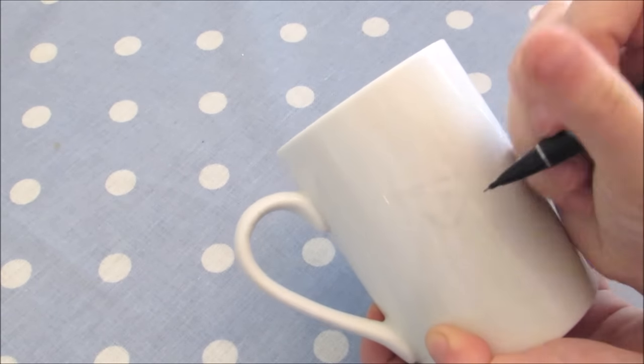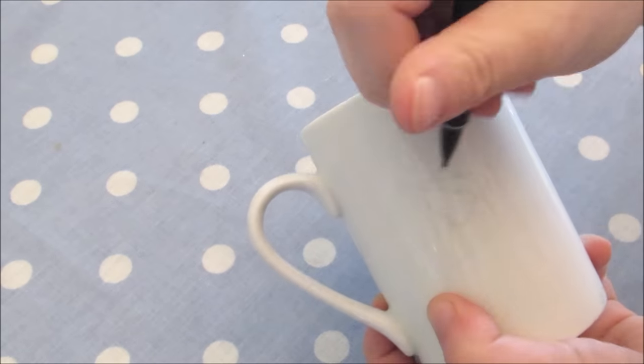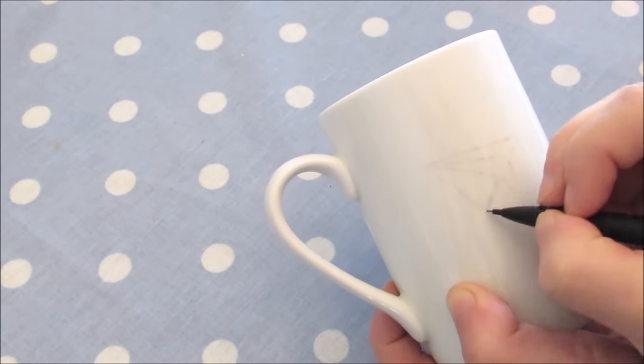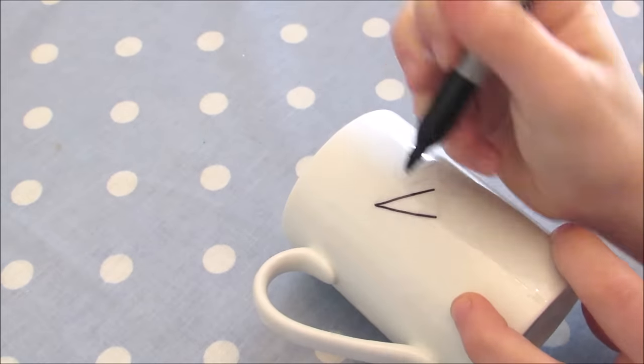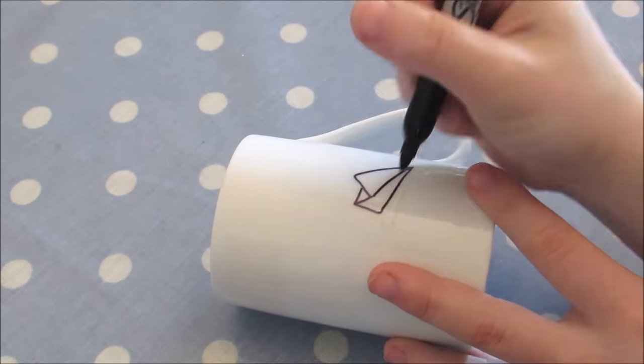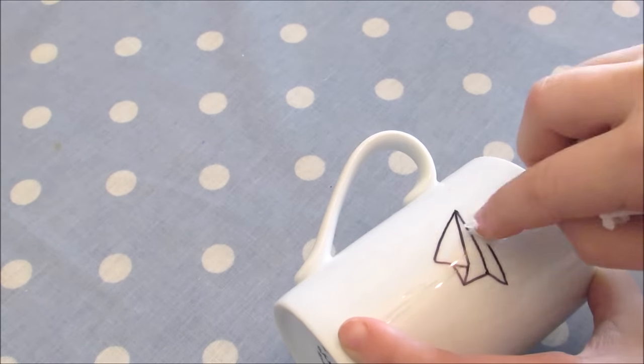For the first design I drew a paper plane across the front of the mug. You can sketch your design out with pencil first if you prefer, which means that you can rub away any mistakes. I then used a black Sharpie to outline this. The pen can also be rubbed away quite easily before it dries.